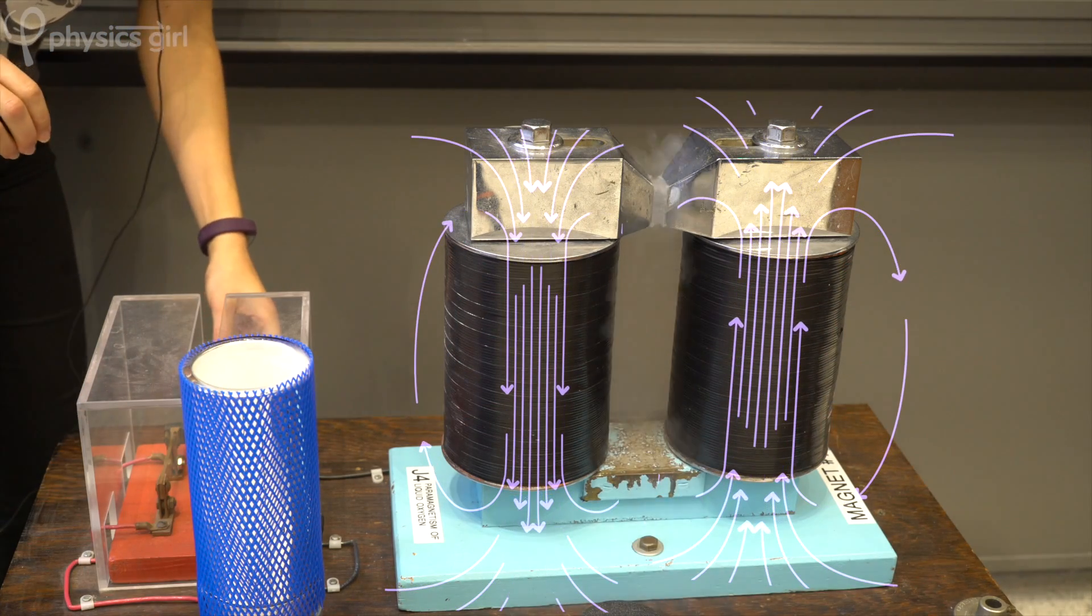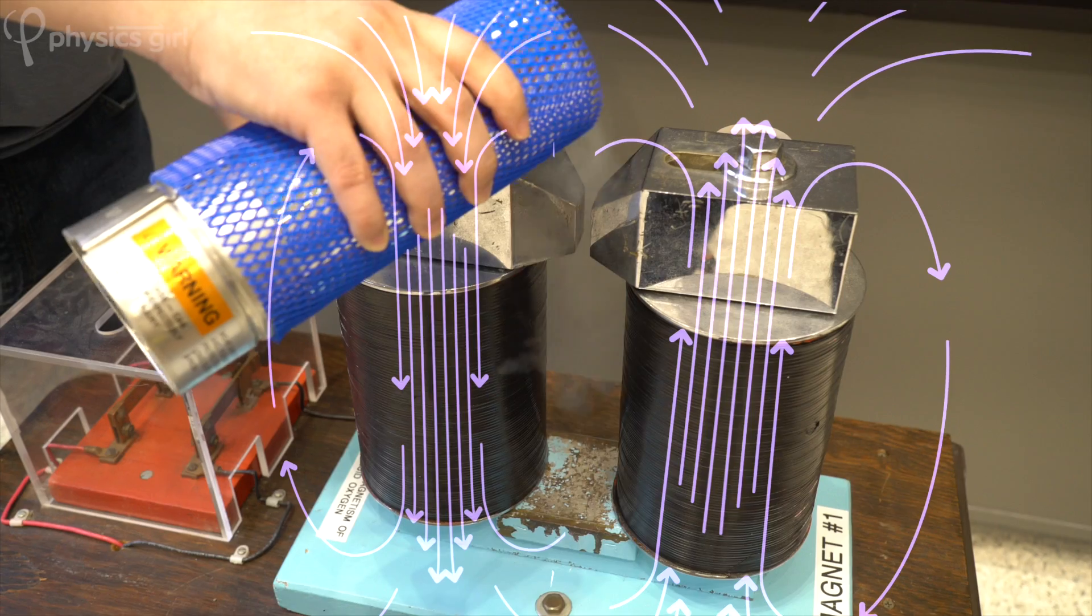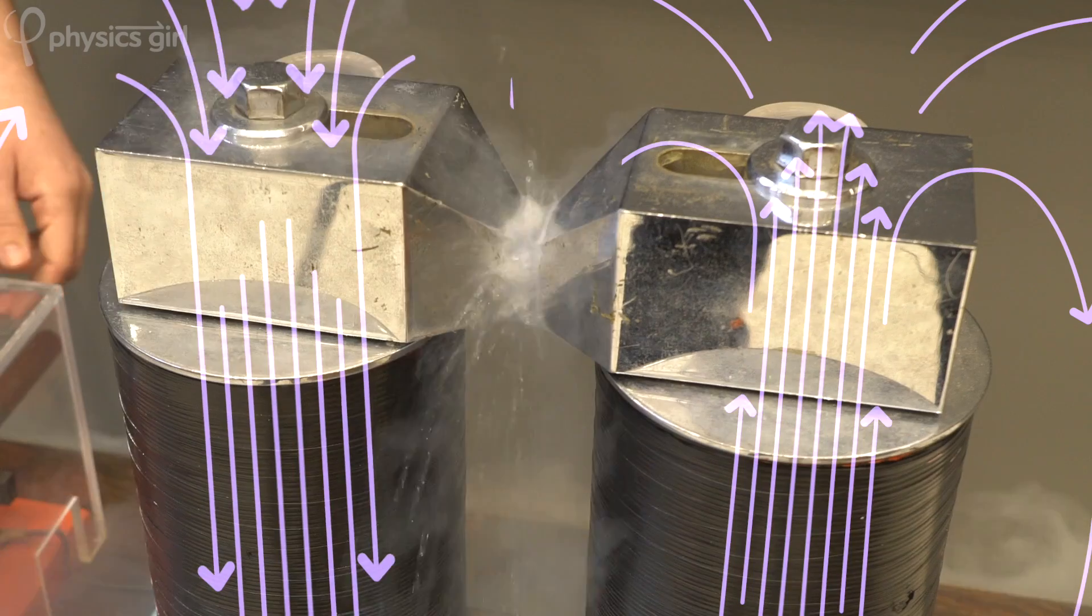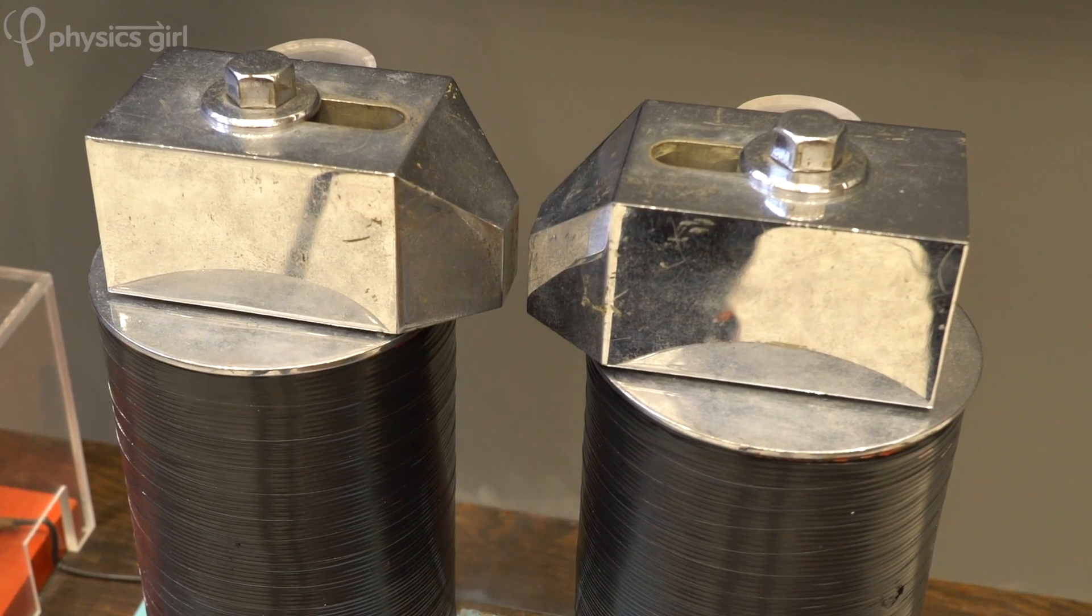The result is a strong magnetic field around the metal pieces, but most importantly, in the gap between them. It's just like a strong magnetic field between two permanent magnets, except you can turn it off.